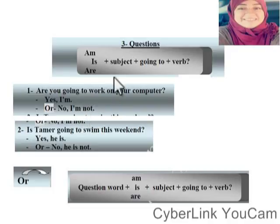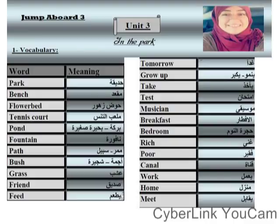So today we took the present continuous with am/is/are + verb with -ing. We learned how to make a question and how to make a negative sentence. We also learned the keywords. We also took today present continuous in the future using 'going to' + verb in the infinitive, with examples, questions, and negatives. That was very simple today — unit 3.